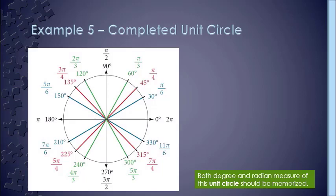We had already done the first quadrant and taken care of the angle measures on the axes. Your job was to come up with the radian measure of the second, third, and fourth quadrants. Now all of these angle measures should be memorized — degrees and radians. It seems like a daunting task, but there's actually a way to remember this without actually having to memorize it. If you pay attention to what's going on in the first quadrant and the symmetry of the circle, along with some similarities with the fractions, I think you'll have an easy time.